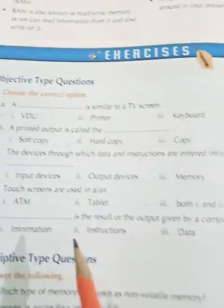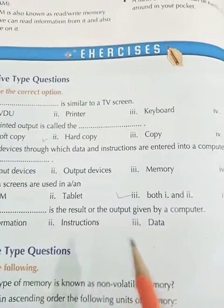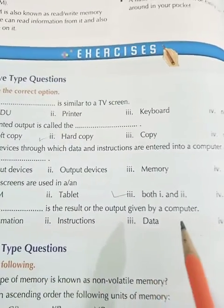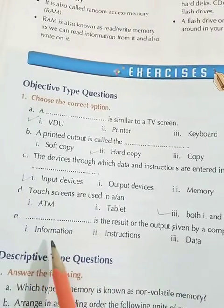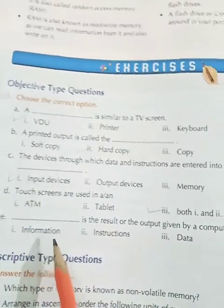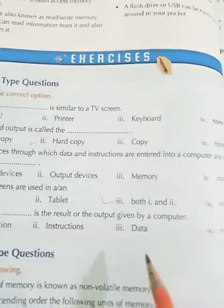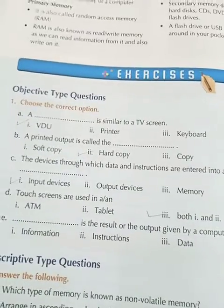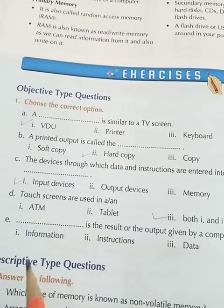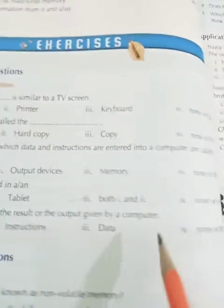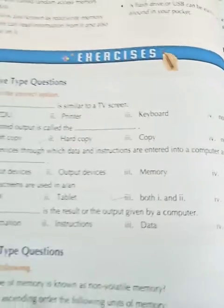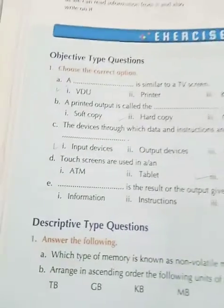E: Dash is the result or the output given by a computer. Options: number one, information; number two, instructions; number three, data; number four, none of these. The correct option is none of these.